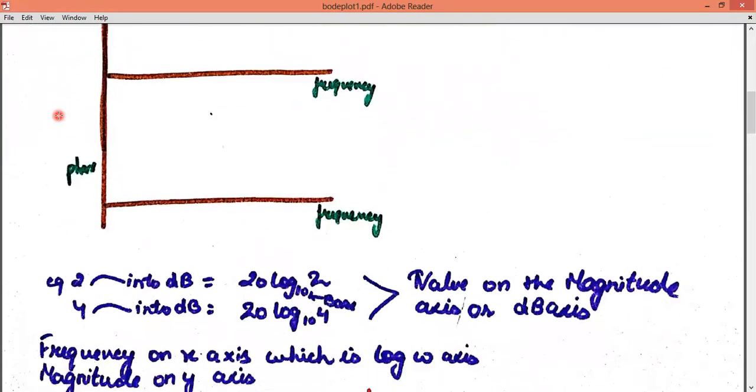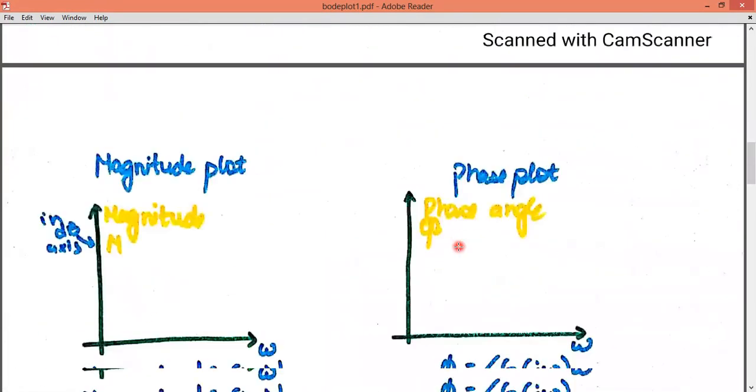Suppose you are told to plot 2 in dB. How will you do it? You have to write 20 log base 10 of 2, and whatever its answer is, it should be plotted on that graph. The magnitude values we have, we need to plot them in dBs. Suppose 4 is given. How are you going to write in dBs? You have to write 4 into dB like 20 log base 10 of 4. From now on, we will also call magnitude axis as dB axis. Frequency we will call x-axis.